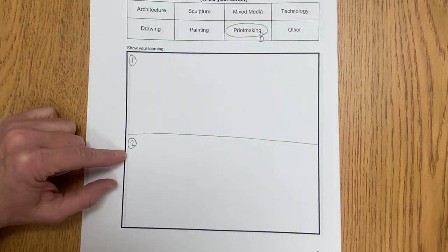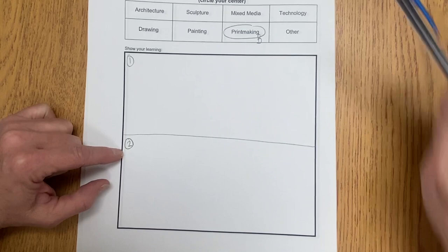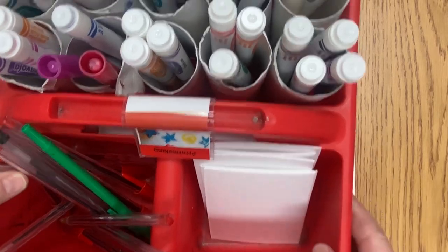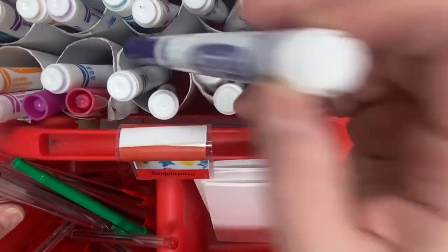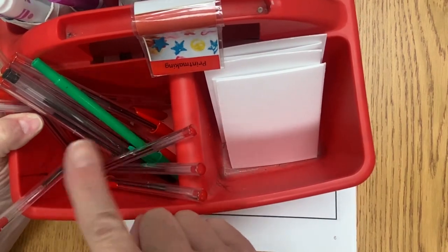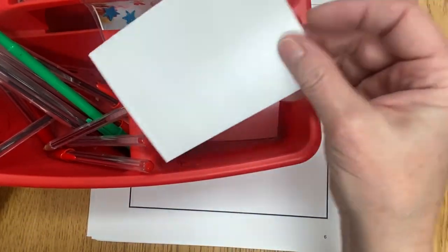Now I'm ready to get my stuff from printmaking and start exploring. At the red table I can get my whole little caddy that has water-soluble markers, these are Crayola brand, a pen, it doesn't matter what color though, and a little sheet of foam.